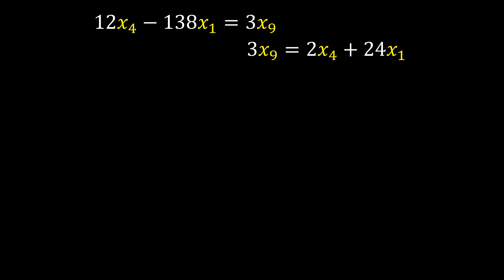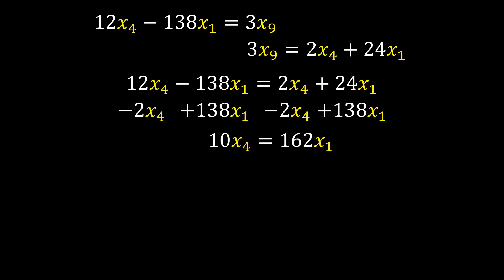Okay, now we're getting really close. Now we have two equations that both equal three times X9. So what we can do is now set those two equal to each other. And we're only in terms of two variables, we have X4 and X1 on both sides. So we need to get those on the same side. So if we subtract the two X4 from both sides and add the 138 X1 to both sides, we can get this equation. And if we put it in this form right here, this is where we want to be, we want to be in this form. This tells us the coefficients that we want for our first two variables, X4 is 162, and X1 is 10.